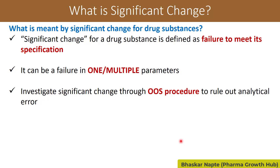Essentially you are talking about an out-of-specification result. Those out-of-specification results must be investigated first to confirm there is no analytical error. Once you confirm that no analytical error occurred and the significant change is real, you can proceed with subsequent corrective actions — for example, stopping testing at accelerated condition and starting analysis of intermediate condition samples.